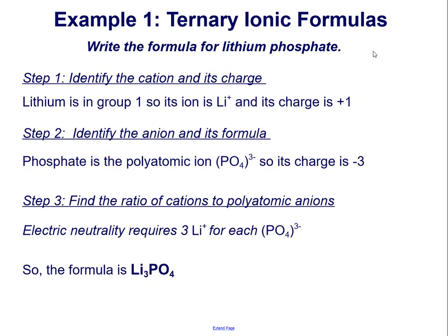Example 1: ternary ionic formulas. Write the formula for lithium phosphate. Step 1: identify the cation and its charge. Lithium is in group 1, so its ion is Li+, and its charge is positive 1. Step 2: identify the anion and its formula. Phosphate is the polyatomic ion PO4, with a charge of 3 minus. Step 3: find the ratio of cations to polyatomic ions. Electric neutrality requires three lithium ions for each phosphate ion, since lithium has a charge of positive 1 and phosphate has a charge of negative 3. So the formula is Li3PO4, and note that PO4 is not written within parentheses because there is only one of that ion in the formula.